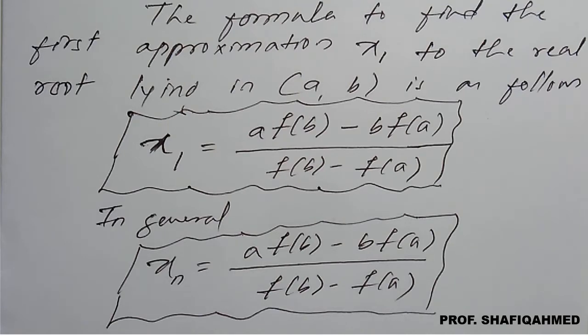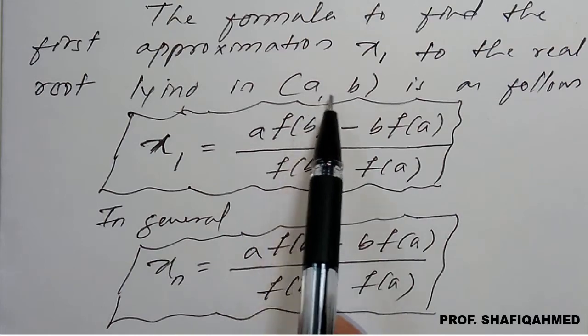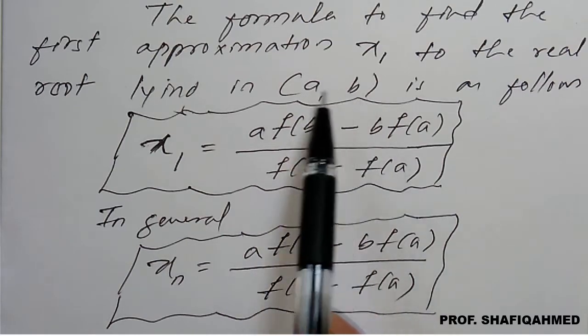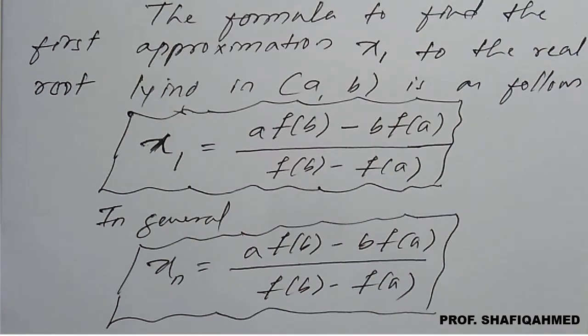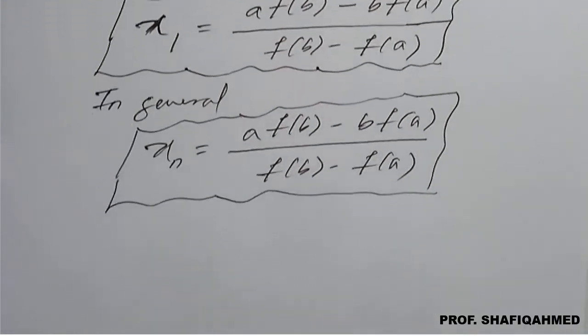So we have to repeat this iteration or repeat this formula till we get an accurate result here. So here to reduce the distance between these two values that is a and b we have one of the important remark we will see that remark.